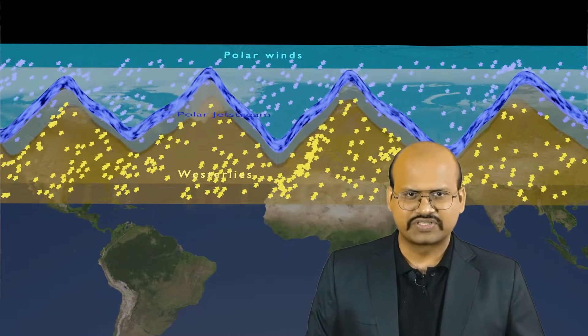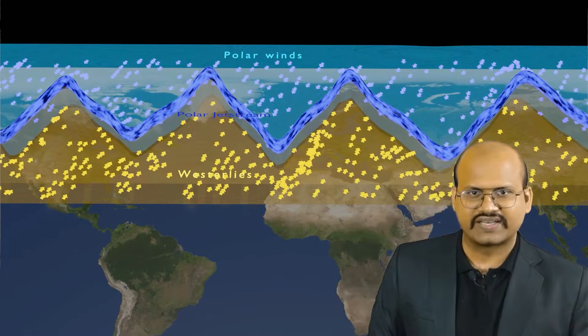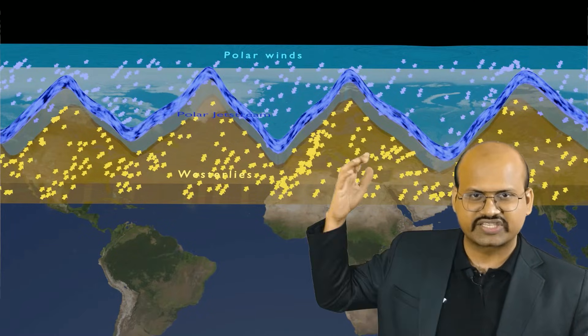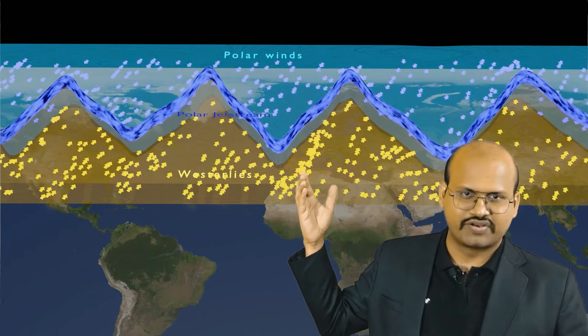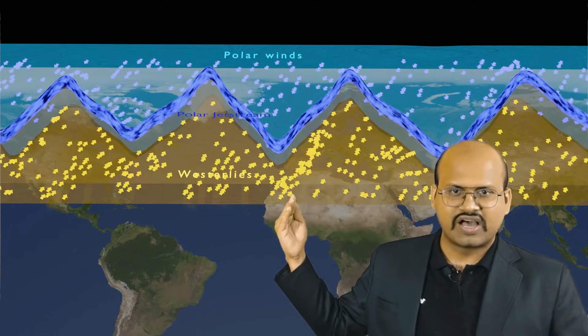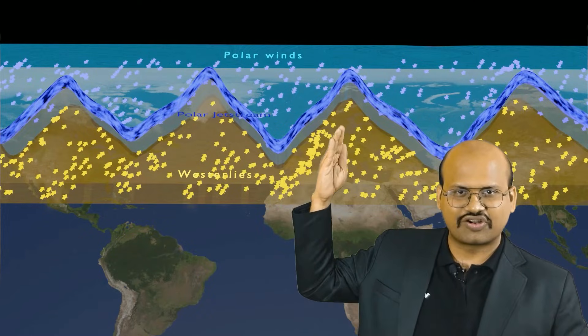The jet stream forms some wave-like structures. At certain locations it is extended more northward, while at other locations it is stretched more southwards. We see that the overall movement of air in the temperate region around 60 degrees is such that we see a northward extension of westerlies while at some locations there is a southward extension of polar winds.